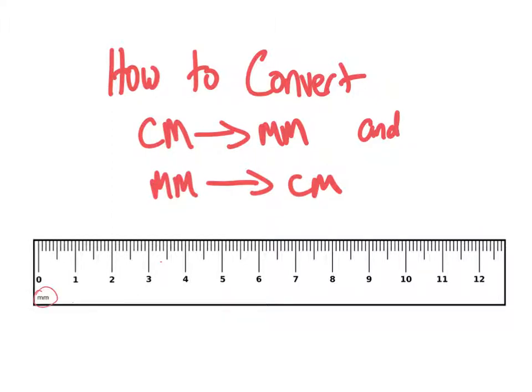It says millimeters. This is actually incorrect. The big numbers here, the zero, the one, this represents centimeters. So the millimeters, what they are referring to, is the little dashes that are in between the centimeters.